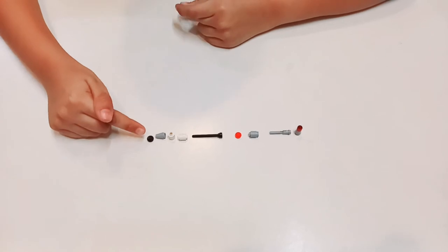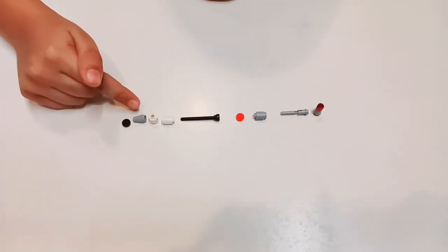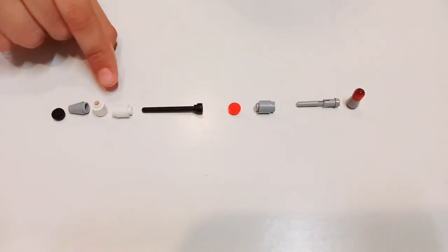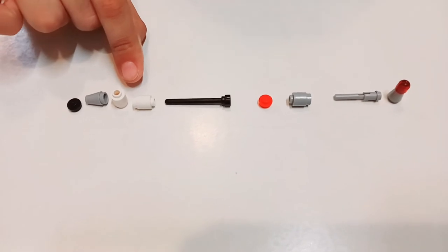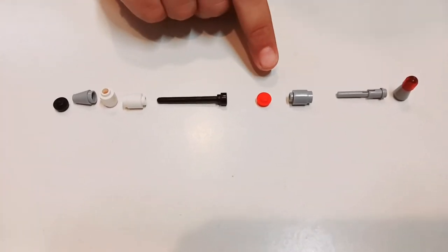So we'll start with the black circular brick, then the rocket shaped turret, and two cylindrical shaped white bricks, a stick, a red circular button,